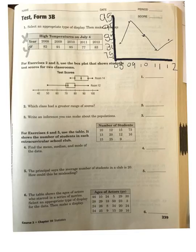For exercises 2 and 3, use the box plot that shows students' test scores for two classrooms. We have room 14 and room 12. Which class had a greater range of scores? So if we look at room 14, we see that they have 100 as their maximum and around 75 for their minimum.